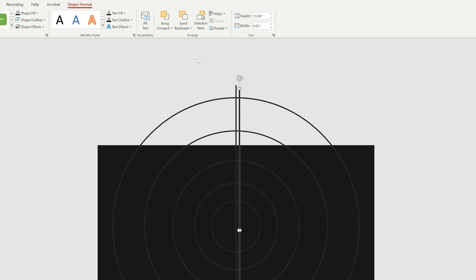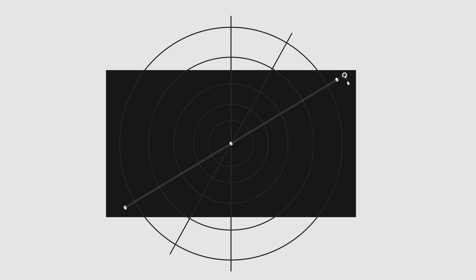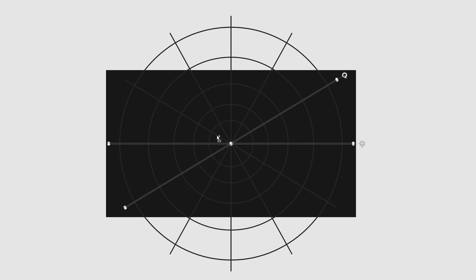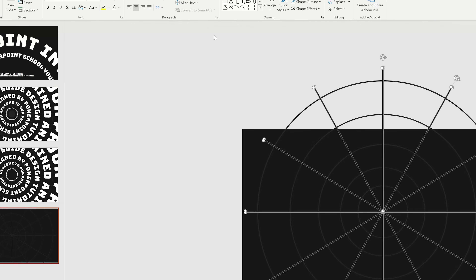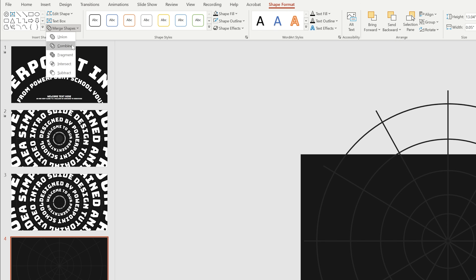Press Ctrl D to duplicate, place the new one in the center middle of our slide. Holding the Shift key, rotate it. Press Ctrl D to duplicate again and holding Shift, rotate the new one. In this way, we just need to duplicate and rotate the rectangle until we get the desired pattern. Let's select all these rectangles one by one, then go to Shape Format, from Merge Shape, select Combine.